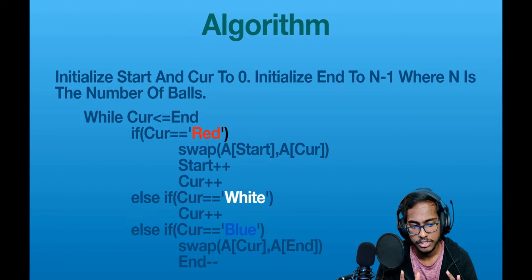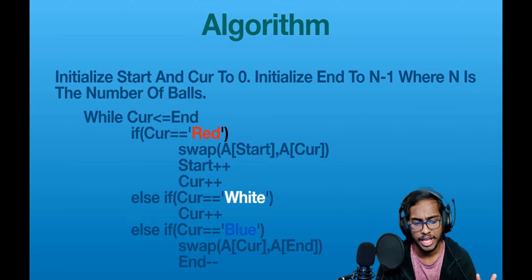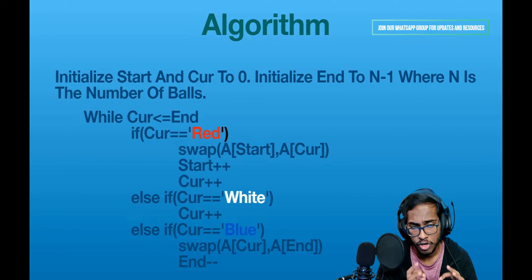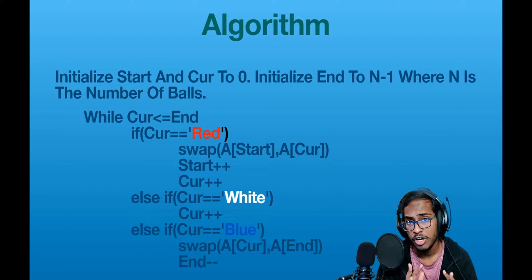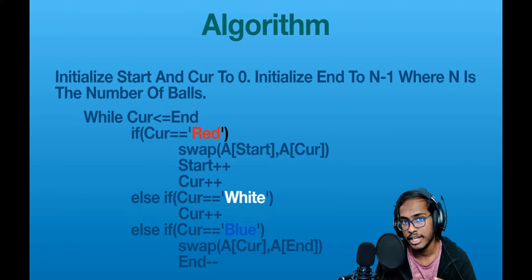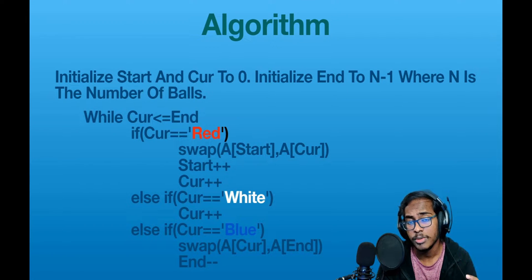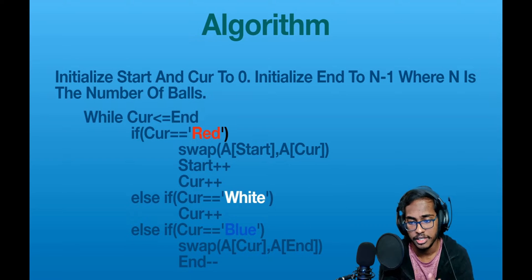If the ball which cut points to is white, we do not perform any swap and simply increment the cut pointer. The ball is already at the place we want it to be. Remember, we want all reds on the left, all blues on the right, and whites in the center. So if we encounter a white ball in the center, we can assume it's in the right place.